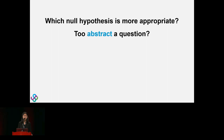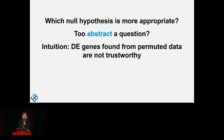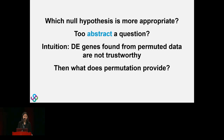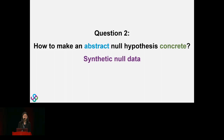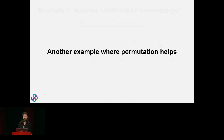Which null hypothesis is more appropriate? Our intuition that having many DE genes from permuted data is a problem relies on the intuition that after randomly labeling our data there shouldn't be DE genes. What permutation actually provides us is a synthetic null — generating synthetic null or in silico negative control from real data by assuming that after permutation there shouldn't be any DE signal. This gives rise to the second question: given that the null hypothesis is often abstract, can we make it more concrete? Synthetic null is a way to make a conjecture into a concrete dataset we can work on.